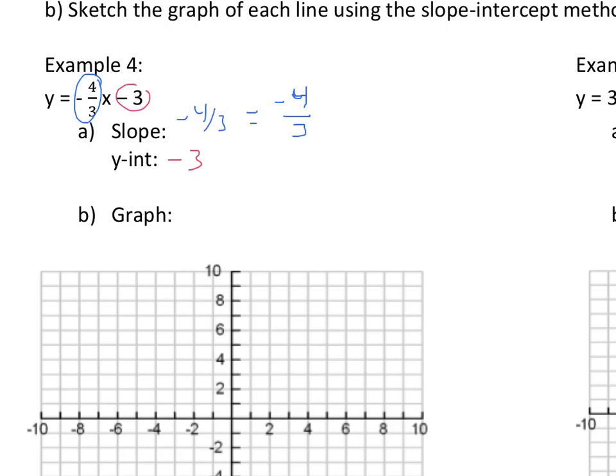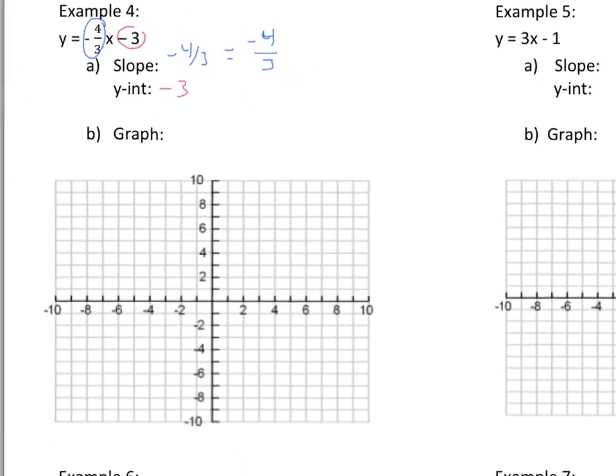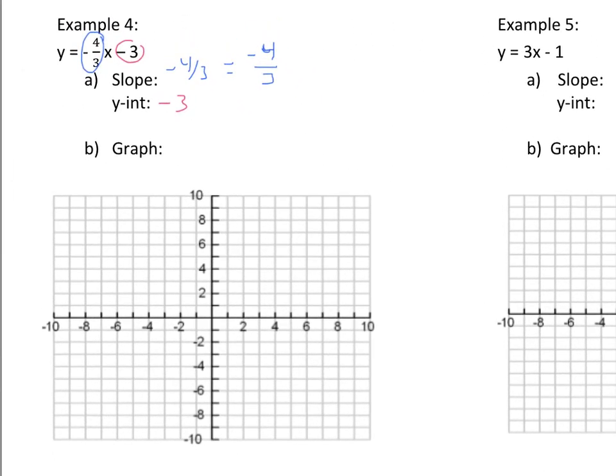Now if we take that information and graph it, the y-intercept is negative 3. So the y-intercept is a point on the y-axis. From that y-intercept we will use slope. Now remember I put the negative with the numerator, and it is change in y over change in x, or in other words, rise over run.